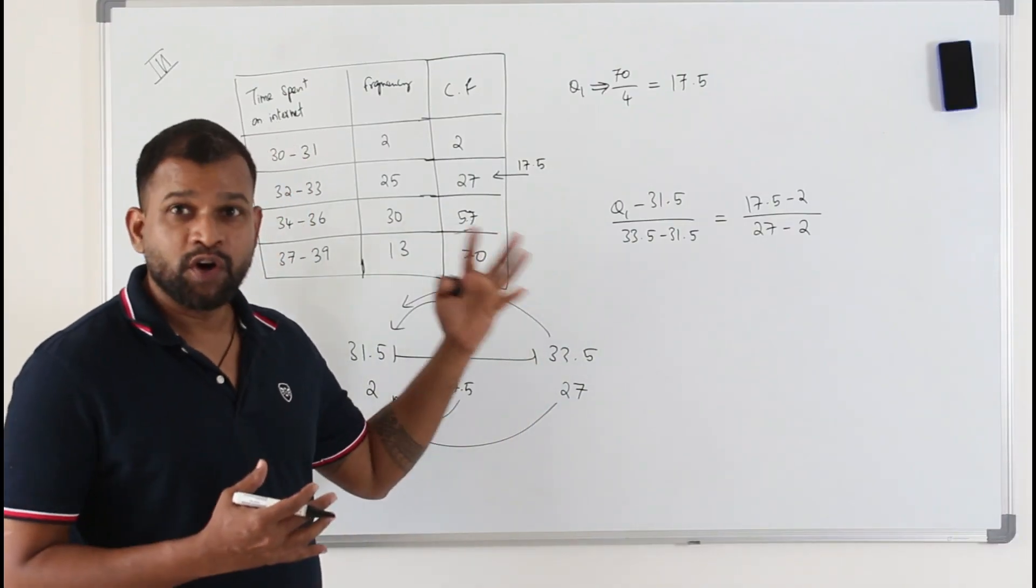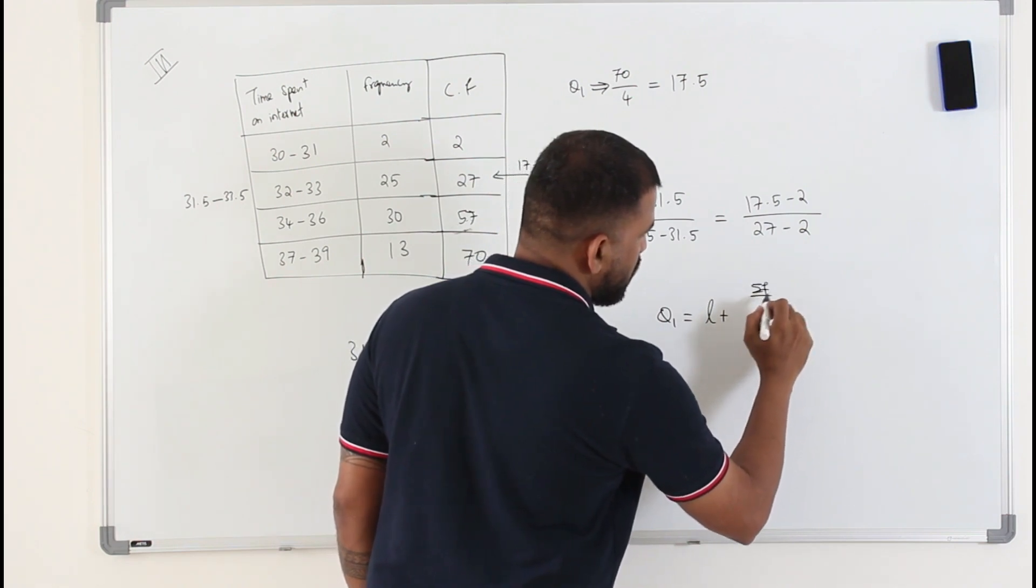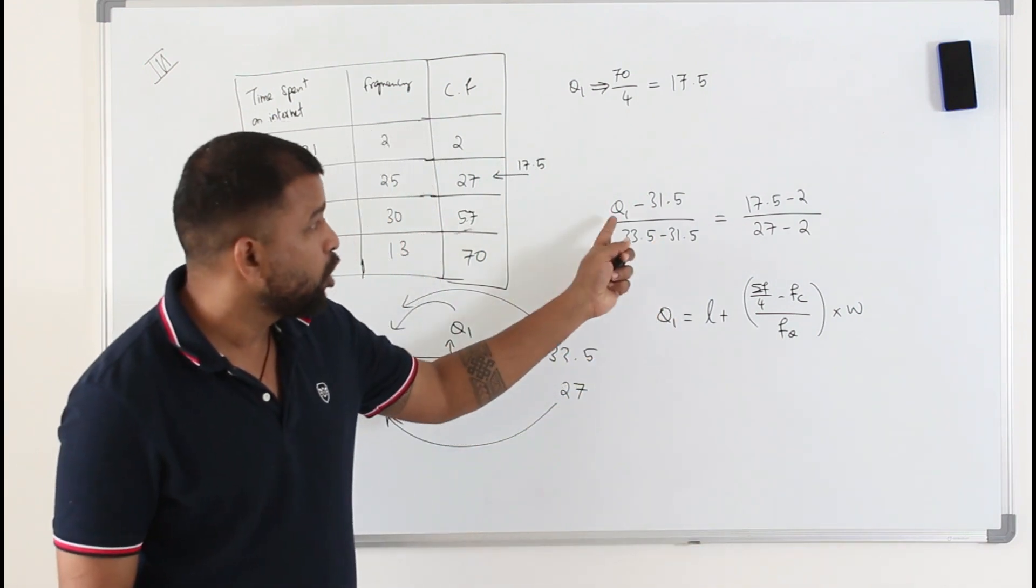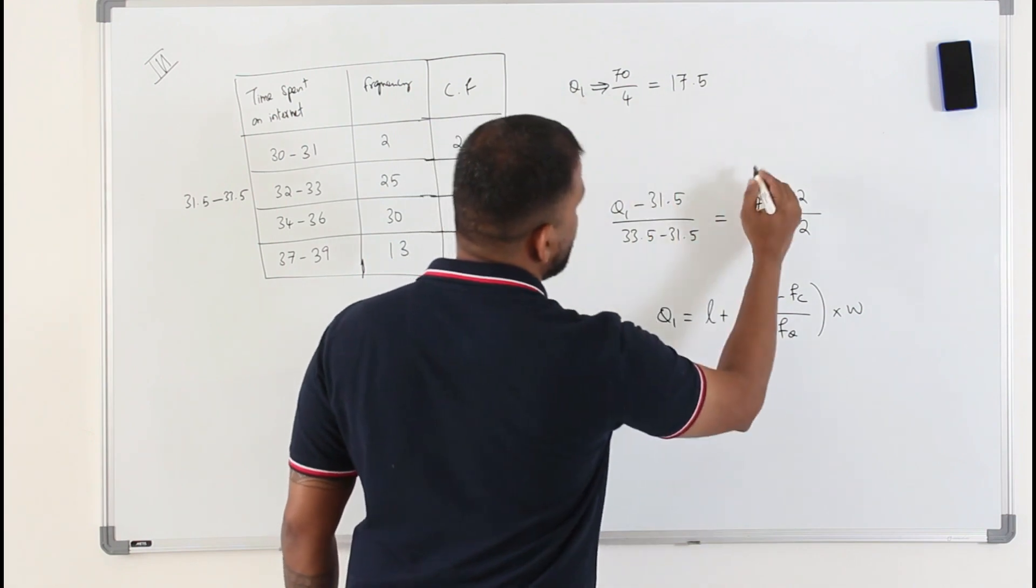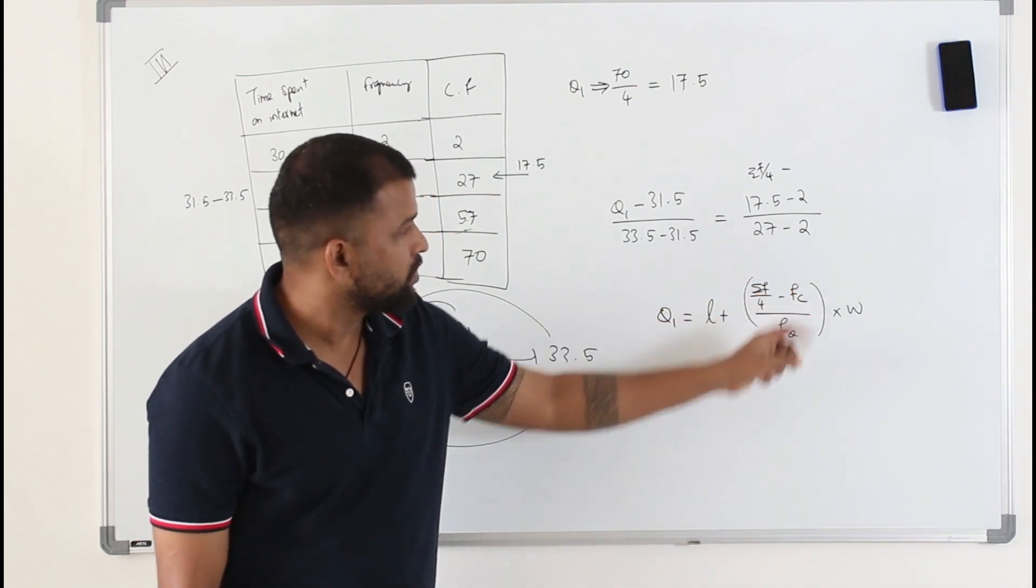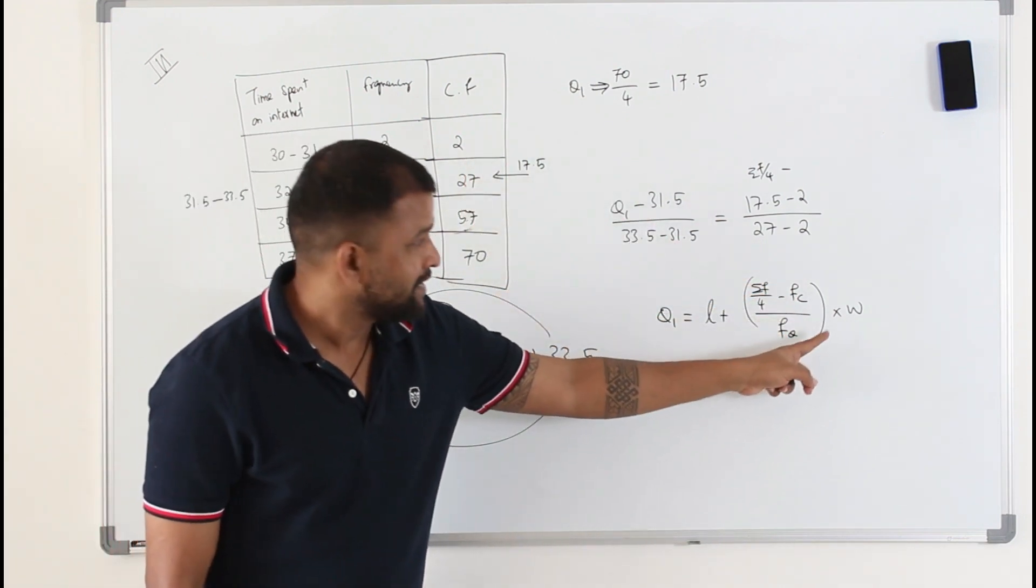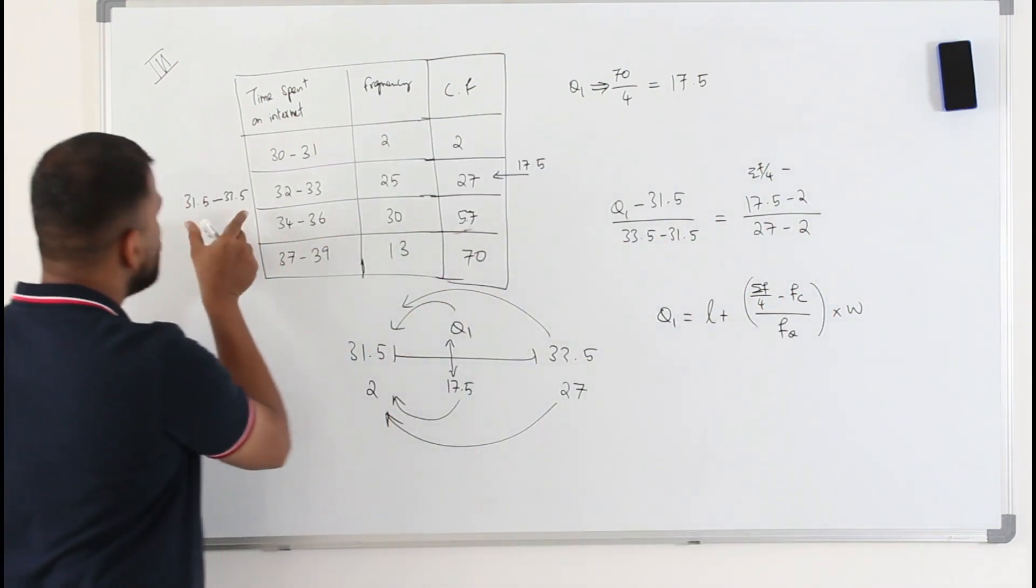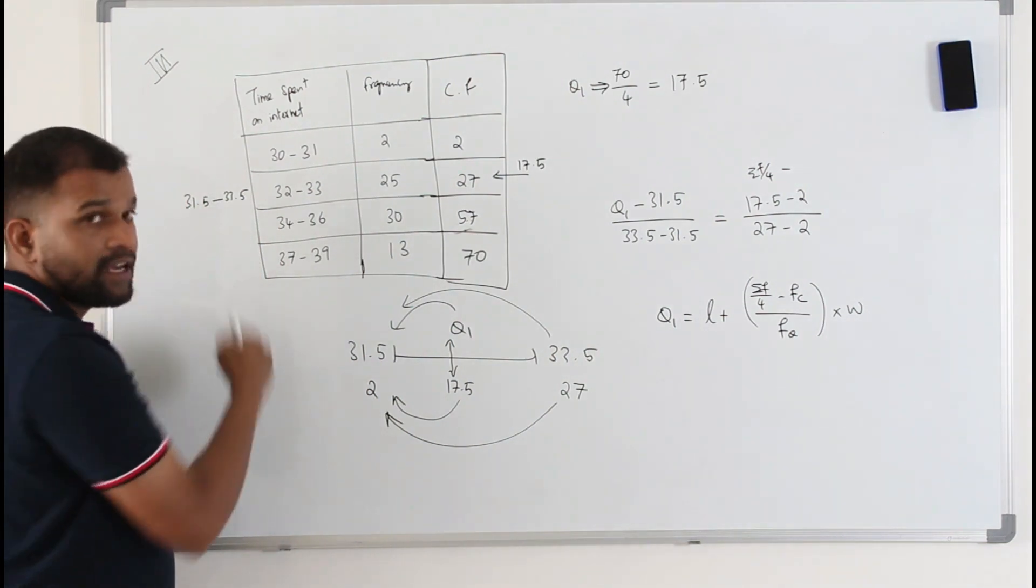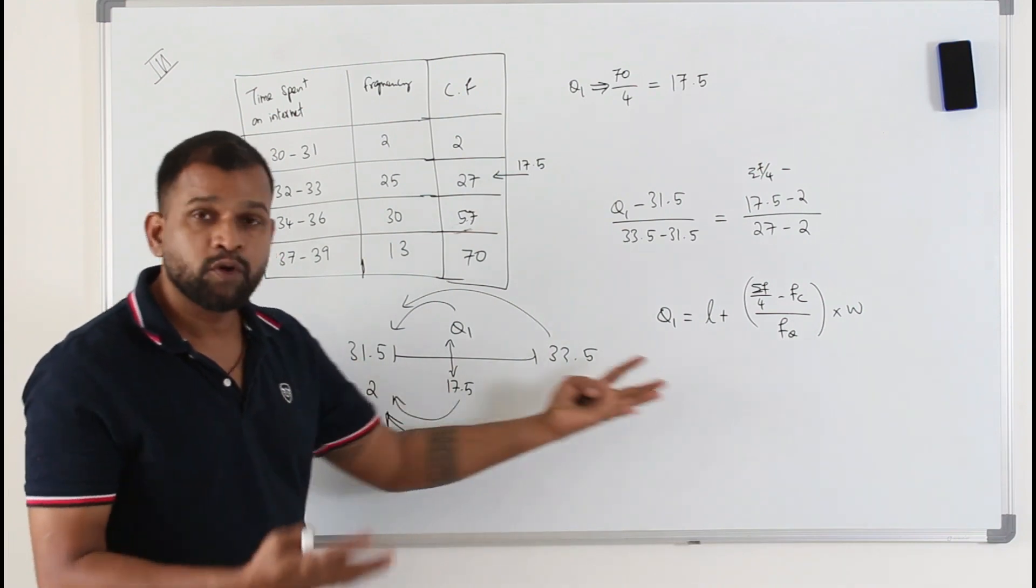So when I started teaching this method I showed you a formula. To find q1 you need to write L plus sigma F over 4 minus Fc over Fq times w which is same as this. If you make q1 as a subject this is going to be sigma F over 4 minus the Fc divided by Fq. The Fq is when you put 27 minus 2 you will get the corresponding frequency. Fc is the previous frequency times the width. Instead of memorizing formula we apply this linear interpolation. It's actually the same.